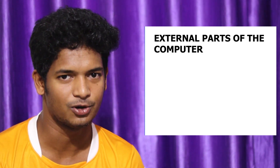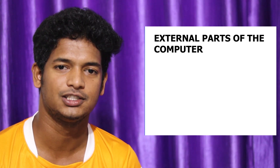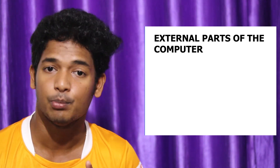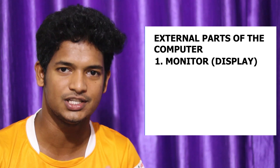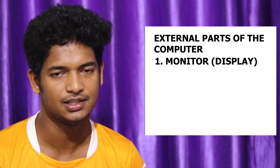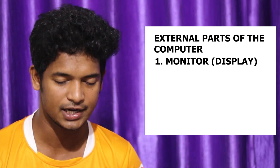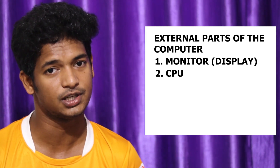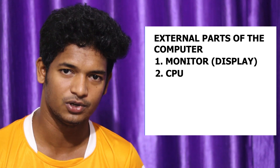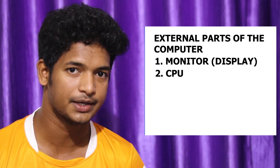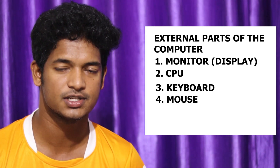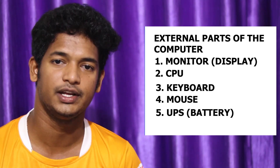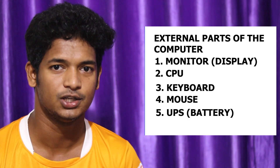Now we will talk about the external parts of the computer. The external parts include: monitor or display screen, CPU, keyboard, mouse, and UPS.